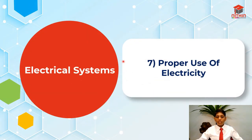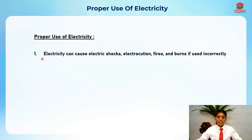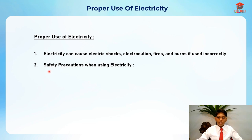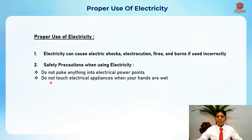For the seventh segment, I'll go through the proper use of electricity. Electricity can cause electric shocks, electrocution, fires, and burns if used incorrectly. Safety precautions include: do not poke anything into electrical power sockets, do not touch electrical appliances when your hands are wet as it can shock you.